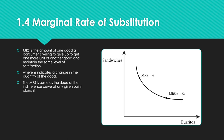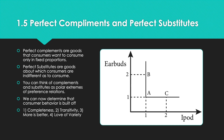Last is Section 1.5 on perfect complements and perfect substitutes. Perfect complements are goods that consumers want to consume only in a fixed proportion. Perfect substitutes are goods about which consumers are indifferent between consuming one or the other. You can think of complements and substitutes as polar extremes of preference relations.